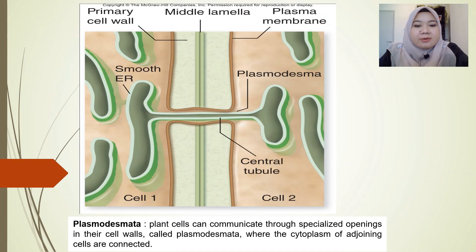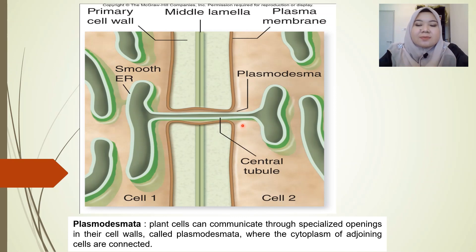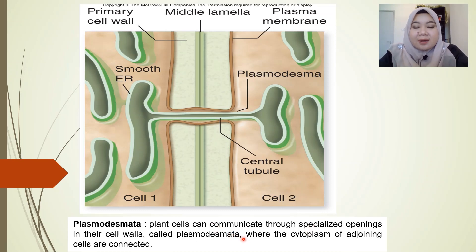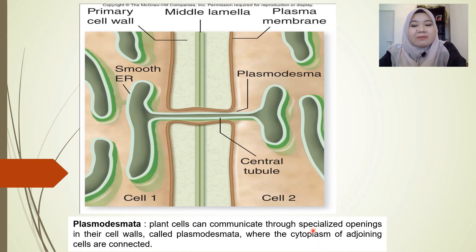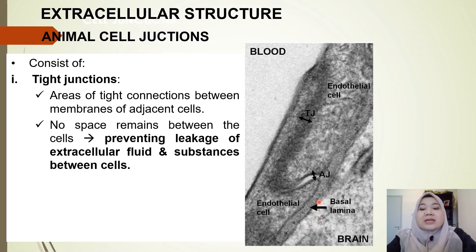Looking at a clearer diagram of a plasmodesma between two cells, you can see it connecting the cytoplasms together, so materials from cell one can pass through the plasmodesma and go to cell two, and vice versa. They can basically exchange materials through the plasmodesmata. This allows plant cells to communicate with each other through these specialized openings where the cytoplasm of adjoining cells are connected.